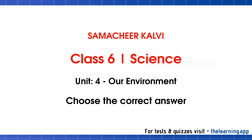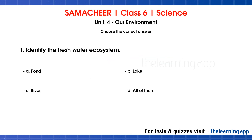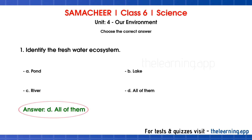First, choose the correct answer. First question: identify the freshwater ecosystem. The options are A. Pond, B. Lake, C. River, D. All of them. The correct answer is option D — All of them.